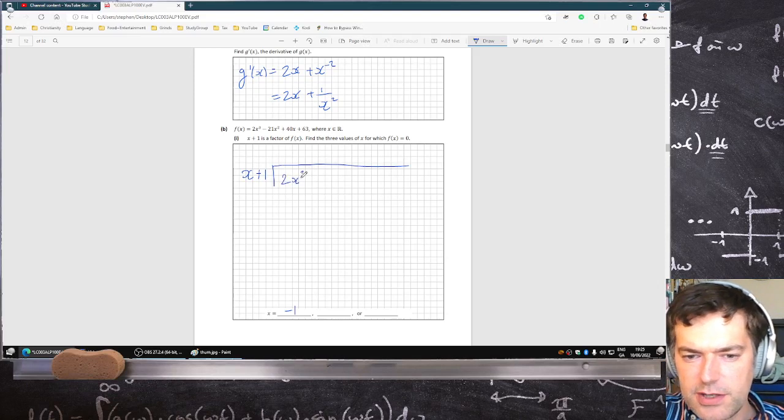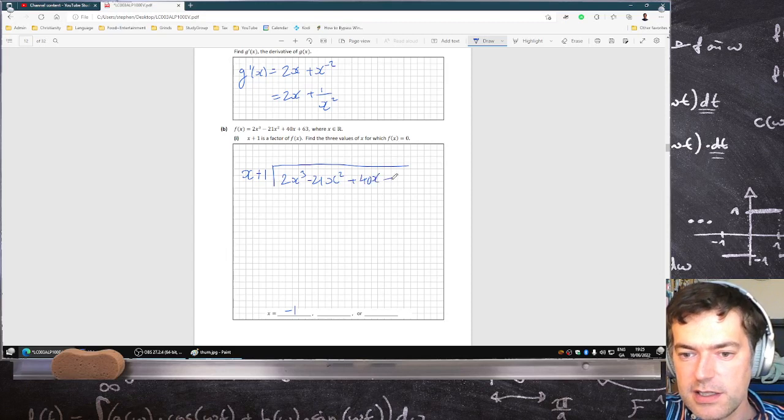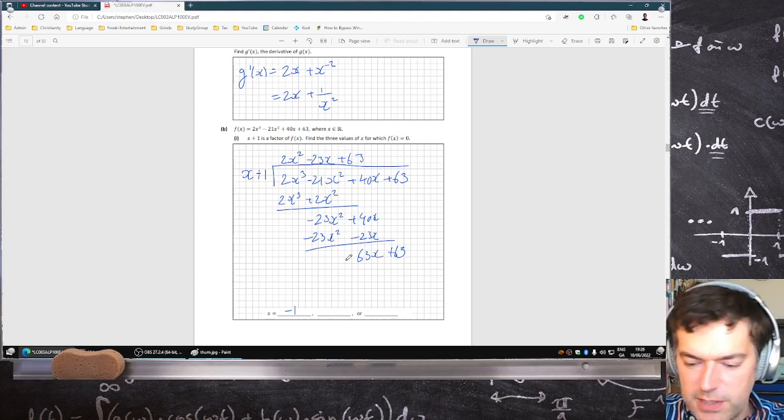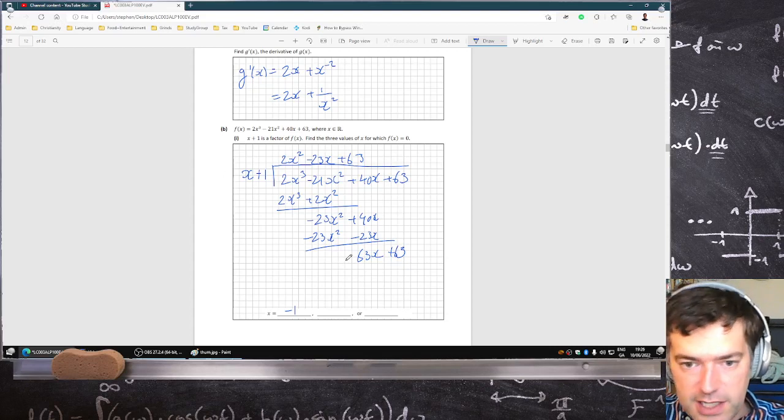Divide that into 2x cubed minus 21x squared plus 40x plus 63. That's going to be 2x squared. That's going to be 2x cubed plus 2x squared. Subtract minus 23x squared plus 40x minus 23x minus 23x squared minus 23x. That's 63x. Carry that down. That's nice, leaving me with a 63 there. And then we can see what's going to happen. We'll get remainder zero as we should.